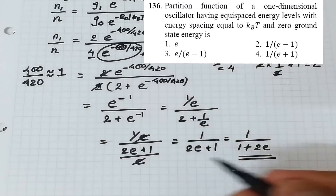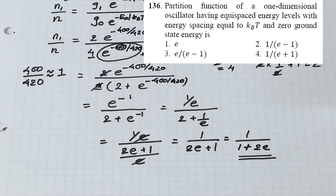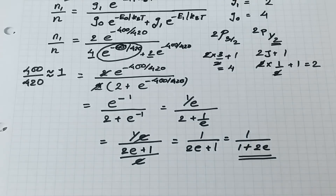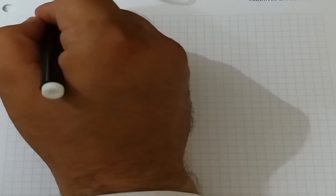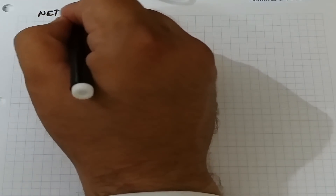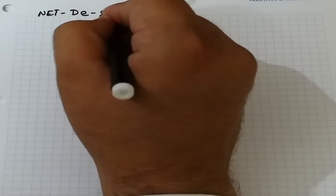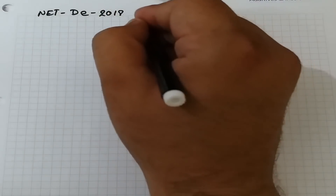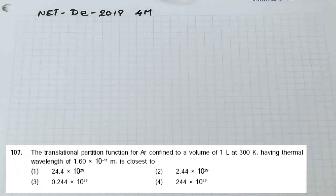Remember: whenever the fraction of molecules in a particular state is asked, always use the Maxwell-Boltzmann distribution law. Moving on to our last numerical from CSIR NET December 2018, asked for four marks: calculate the translational partition function of argon confined in a volume of 1 liter at 300 K, with thermal wavelength Λ = 1.6 × 10⁻¹¹ m.